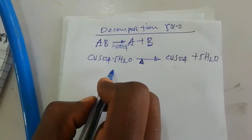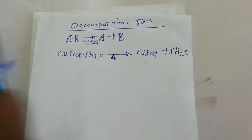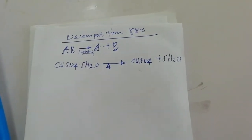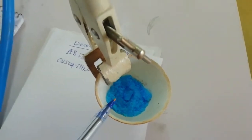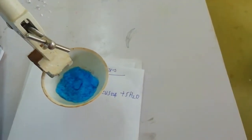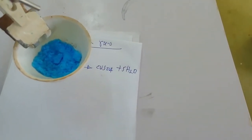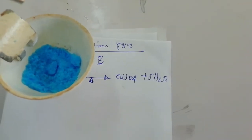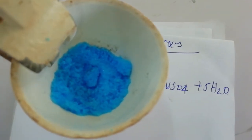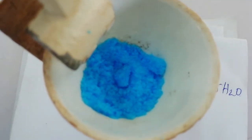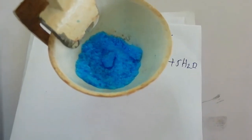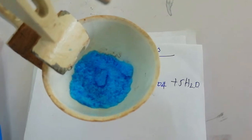Copper sulfate pentahydrate takes the form of a blue color. This is copper sulfate pentahydrate, which is a blue color crystal. Upon heating, it loses its water of crystallization and decomposes into a white powder, which is anhydrous copper sulfate. Anhydrous copper sulfate means copper sulfate with no water, since the water vapors from it upon heating.